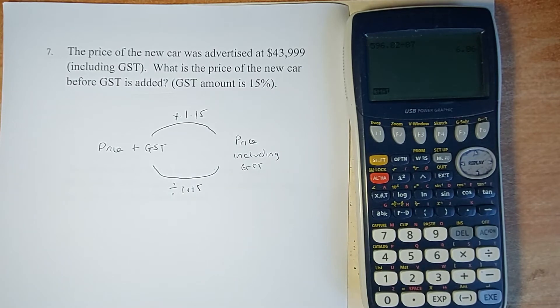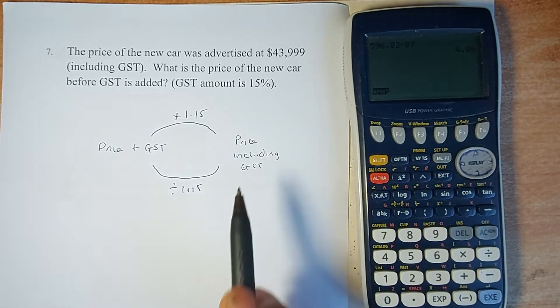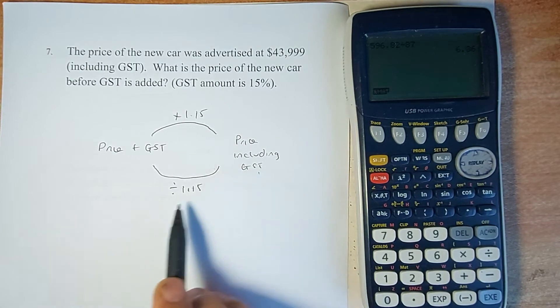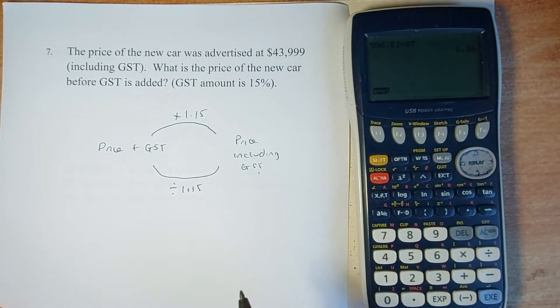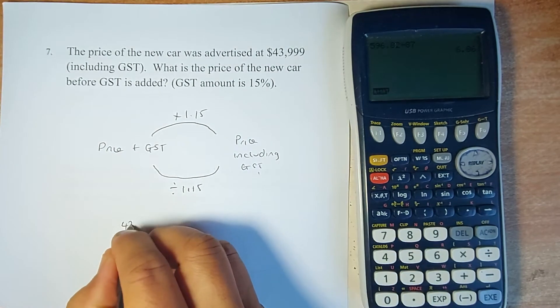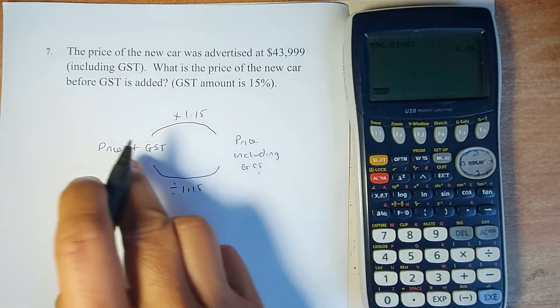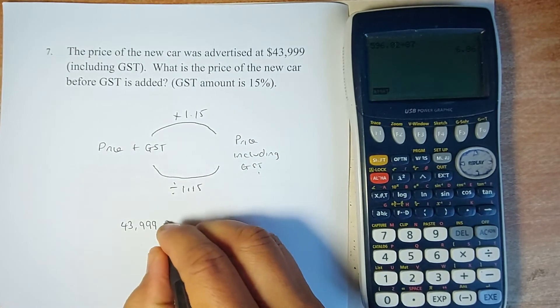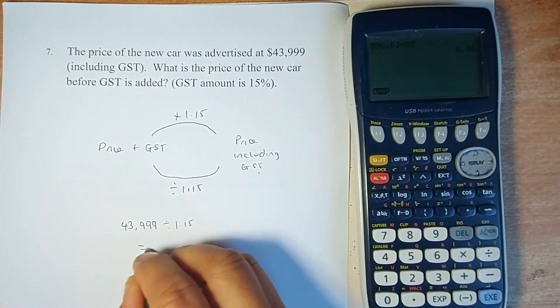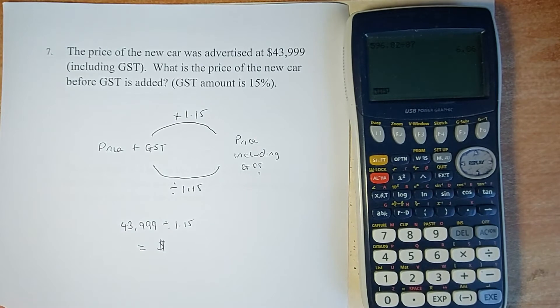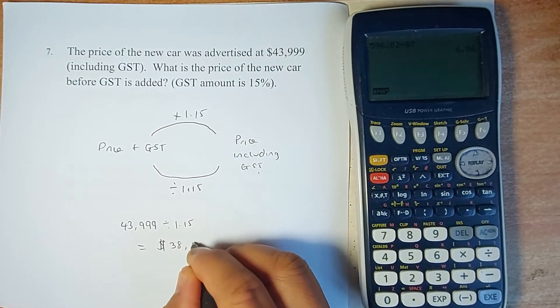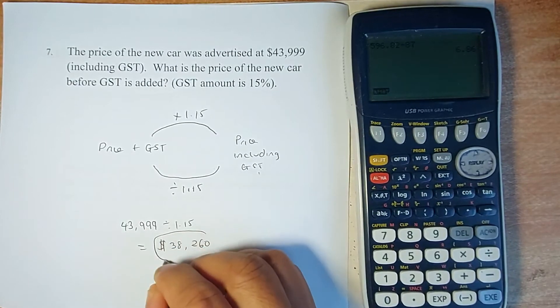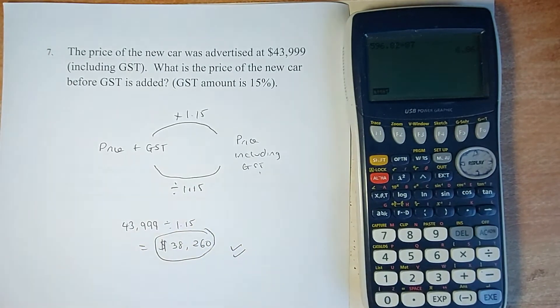The question asks: a car was advertised for $43,999 including GST. What is the price before GST? Simple: you take $43,999 and divide by 1.15. Put it in your calculator, and the answer is $38,260. That is an easy two marks.